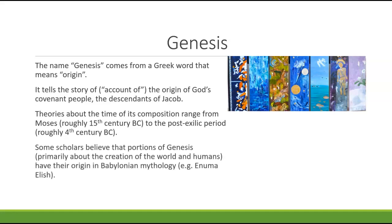Some scholars believe that portions of Genesis — primarily the stories about creation of the world and creation of humans in the first couple of chapters — have their origin in Babylonian mythology. The Judeans had been taken into Babylonian captivity, so they were exposed to Babylonian mythology, and they used that mythology to construct their own account of how God started the world and started human beings.